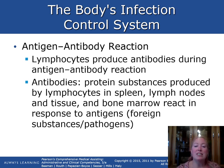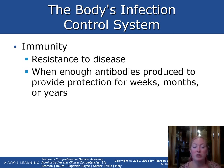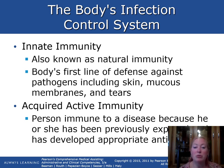During the antigen-antibody reaction, lymphocytes produce antibodies. Antibodies are protein substances produced by lymphocytes in the spleen, lymph nodes, tissue, and bone marrow in response to antigens or foreign substances. Antibodies can neutralize antigens and make them more susceptible to phagocytosis. When enough antibodies are produced, they provide protection for weeks, months, or years, creating immunity to that same disease in the future.